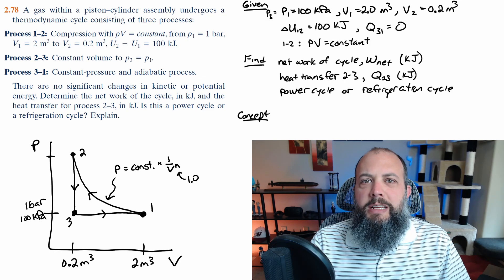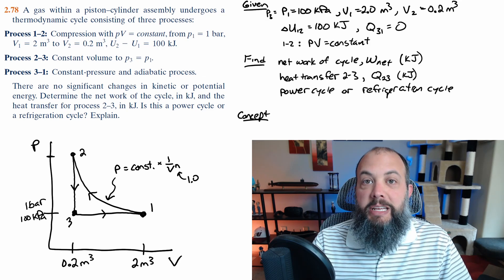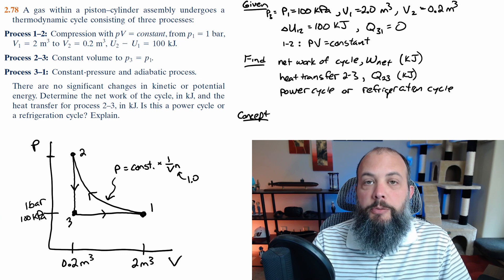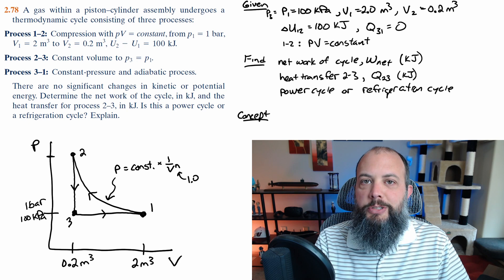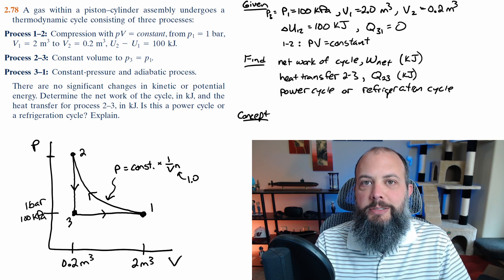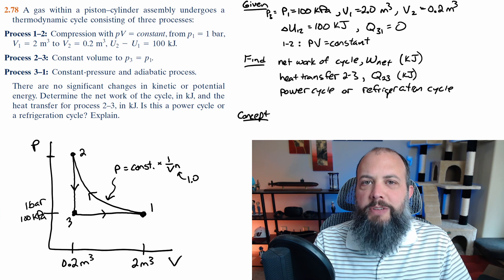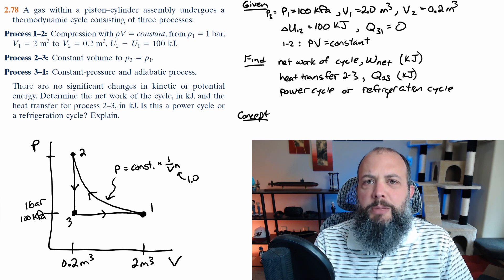To make sure I haven't missed anything I organize my problems as given, find, concept, solution where the given is all of the numerical information that's given in the problem. Find is what I'm looking for both as a word description then also as its variable and then also the units. Concept is just going to be a brief summary of the approach that I'm going to use to solve this problem which for this problem is the main equations.